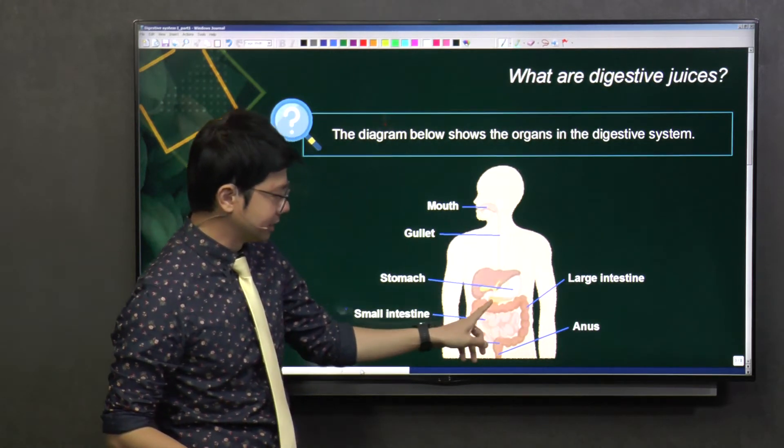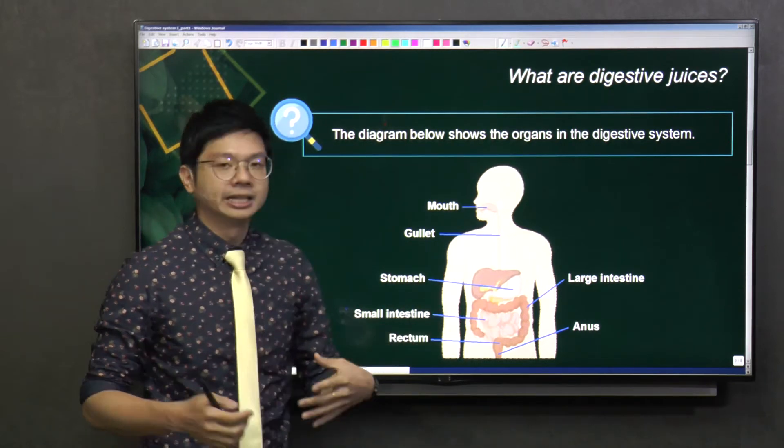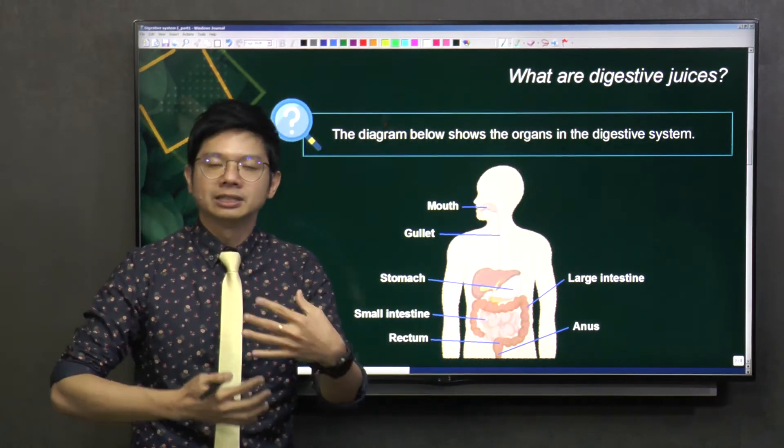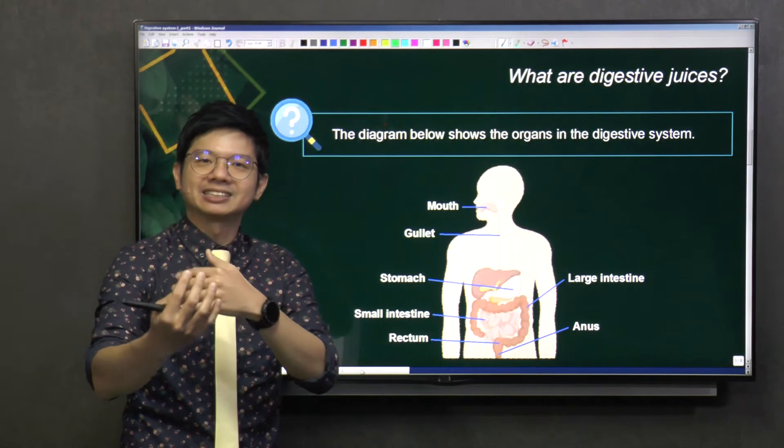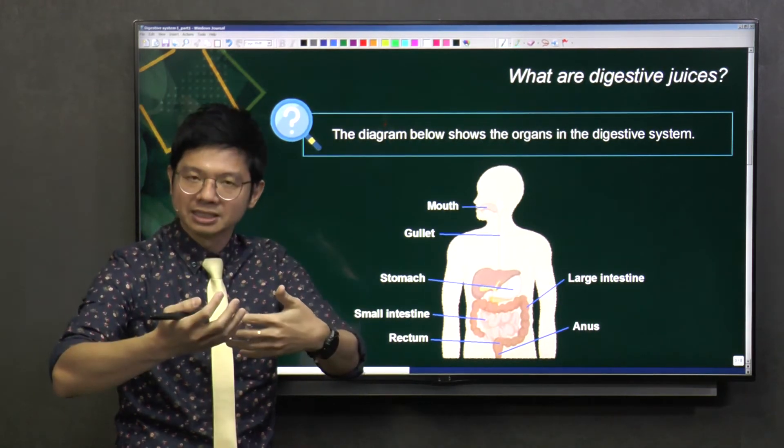It goes to this organ here called the stomach, and the food will stay in the stomach for a few hours. Your stomach is like a washing machine, so it keeps churning the food into simpler and simpler substances.